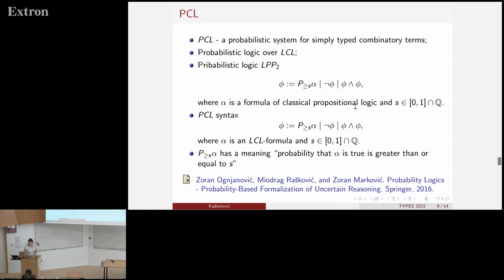I will start maybe from the idea. So how we started working on this? We were looking at probability logics developed by group of researchers in Belgrade. And overview of some of those probabilistic logics can be found in this book by Ognjanovic, Raskovic, and Markovic. One of these logics is this LPP2 logic. So what they did here is they take classical propositional formulas alpha, they apply probability operators on those formulas where this formula P greater than or equal to S alpha has a meaning that probability that alpha is true is greater than or equal to S.